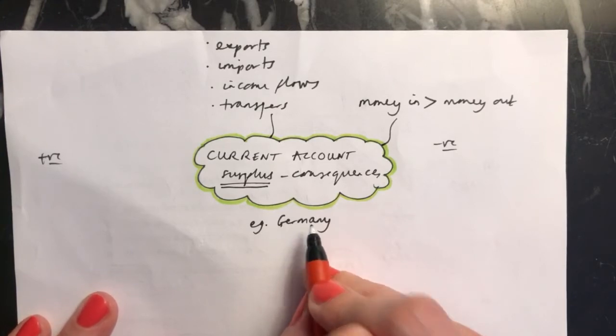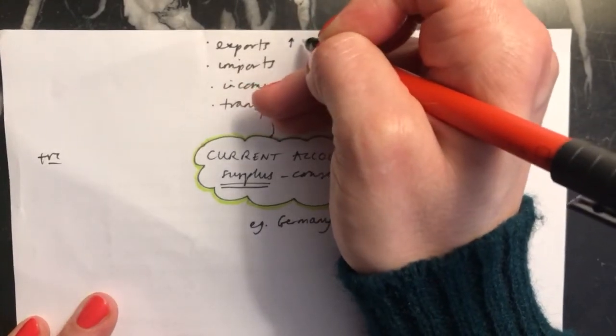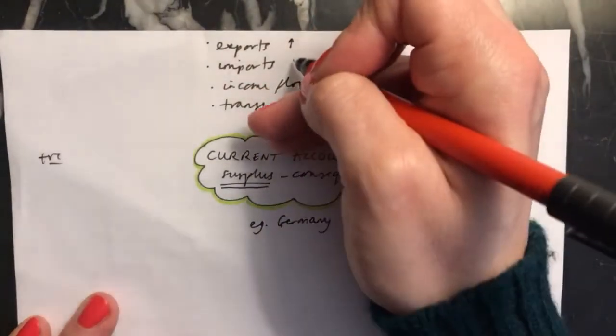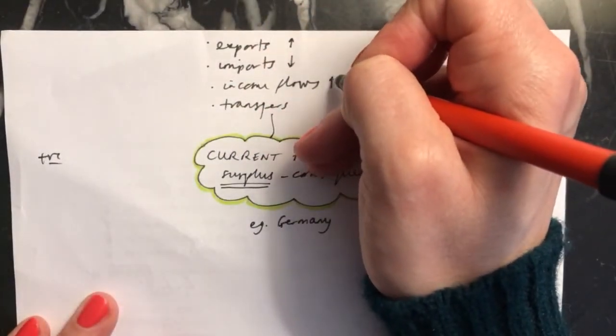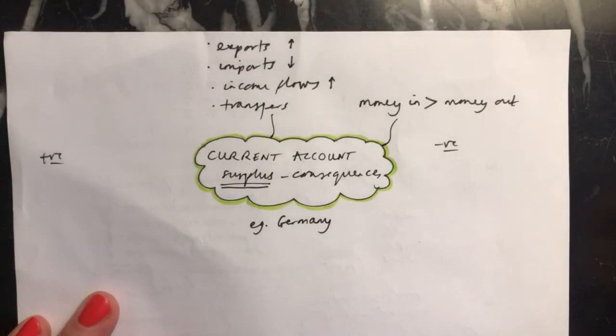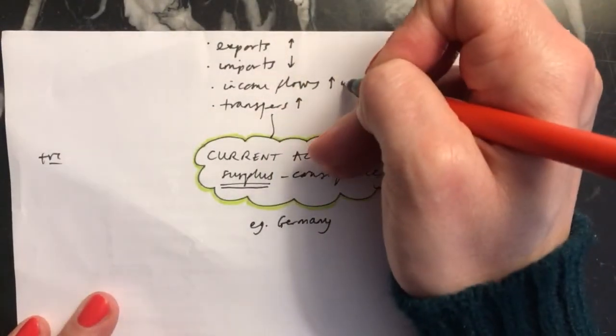If you've got a current account surplus, it's likely that you're seeing an increase in your exports and a decrease in your imports. Also, an increase in income flows coming into your country and an increase in transfers coming into your country.